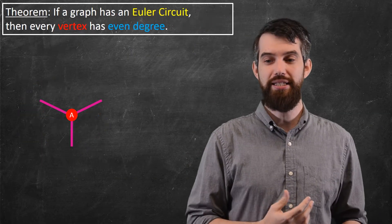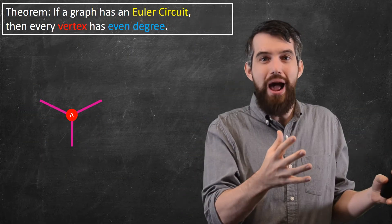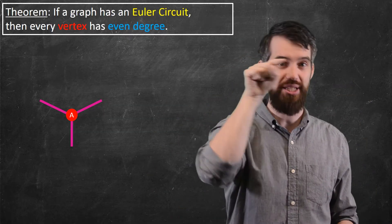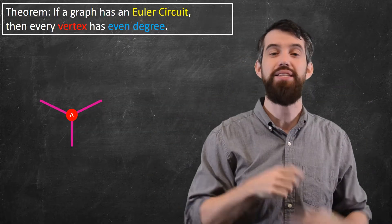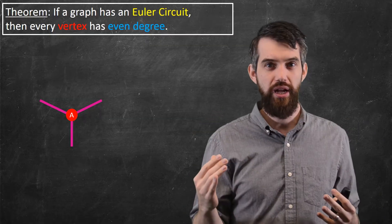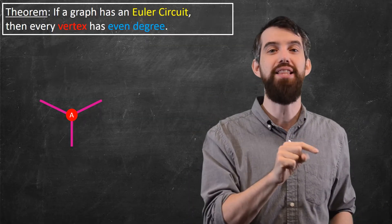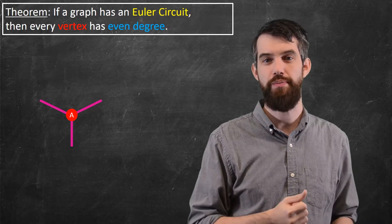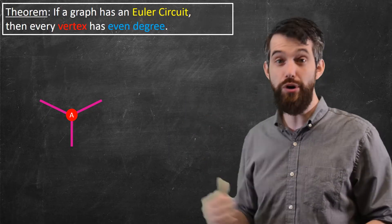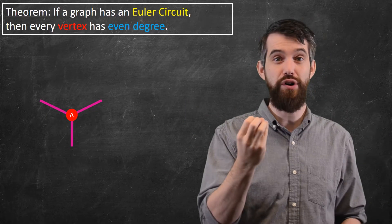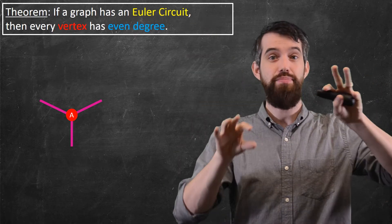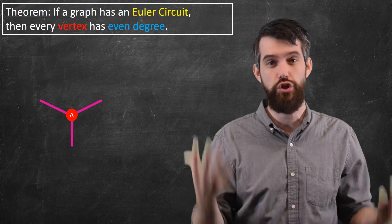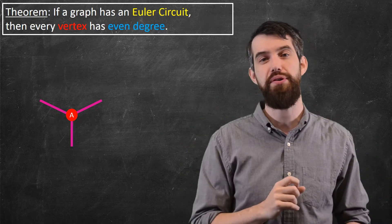The theorem says this: if you have a graph with an Euler circuit — one that starts at a vertex, goes around, gets back to the same place, and hits every edge once — then every vertex in that graph must have even degree. Why is that true? Consider a small portion of a graph with a vertex and edges leaving it. I'll zoom in on this one vertex.